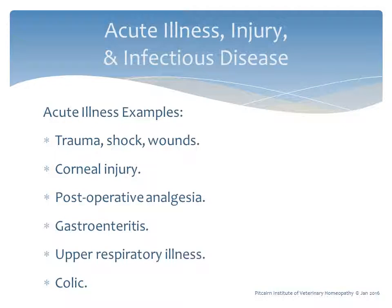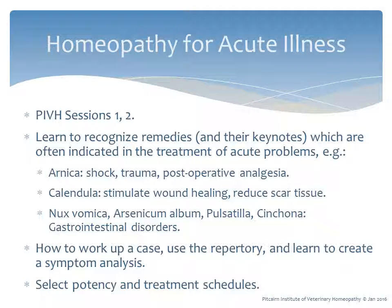Acute illness examples include trauma, shock, wounds, corneal injuries, postoperative analgesia, gastroenteritis, upper respiratory illness, and colic. In the first two sessions of the Pitcairn Institute's professional course, students learn remedies in their keynotes for acute problems. For example, arnica is used for shock, traumatic injuries, and postoperative analgesia; calendula to stimulate wound healing; and nux vomica, arsenicum album, pulsatilla, and cinchona for gastrointestinal disorders. Students also learn case workup, the homeopathic repertory, symptom analysis, potency selection, and treatment schedules.